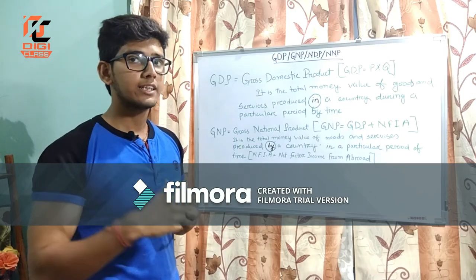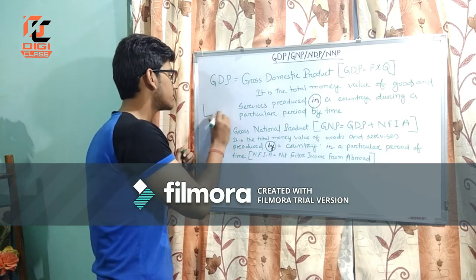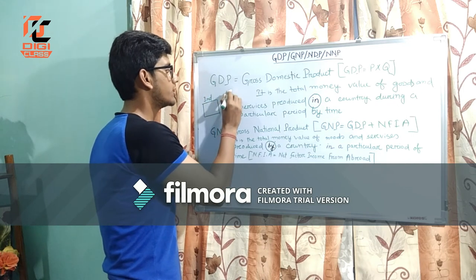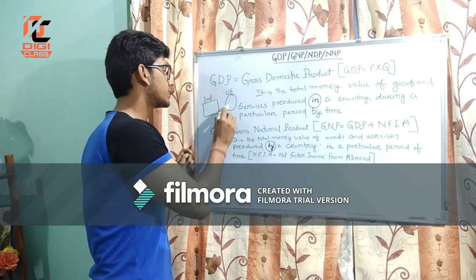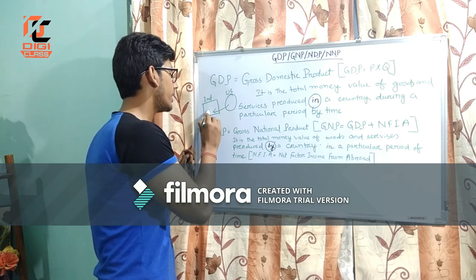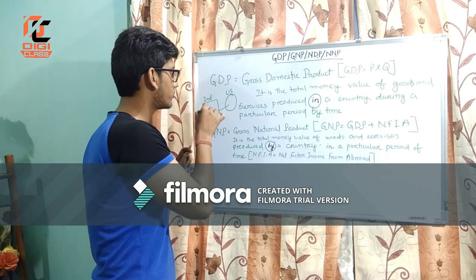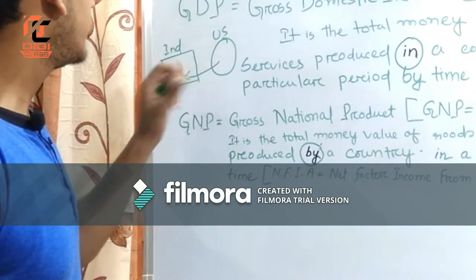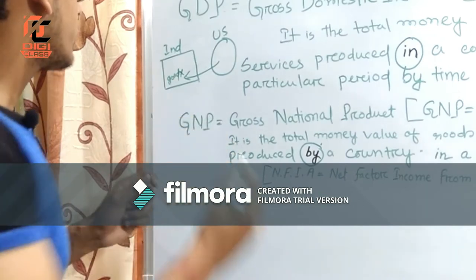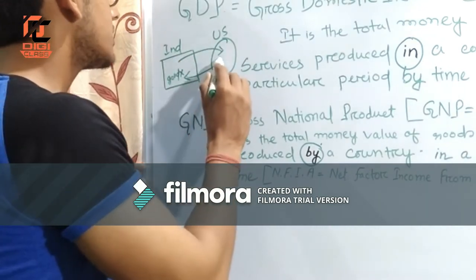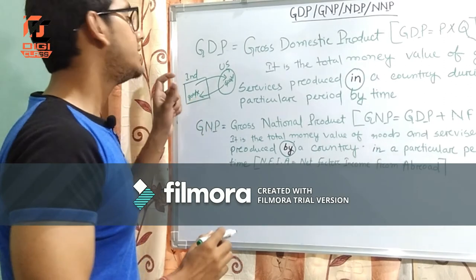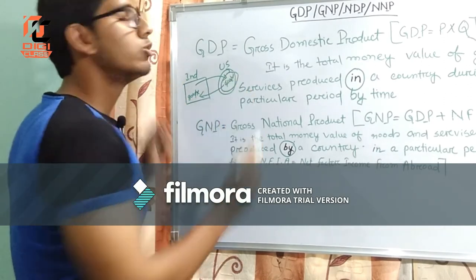Let us understand it by an example. Let's take two countries: India and the US. If a company from the US comes to India and produces a good within the geographical boundary of India, it will be calculated in the GDP of India. In another case, if an Indian company goes to America and produces a good Y, while calculating the GNP of India we will consider the value of good Y. This is the basic difference between GDP and GNP.